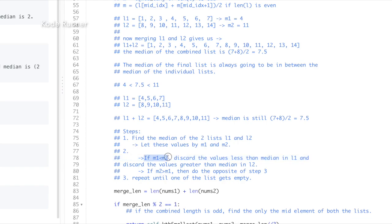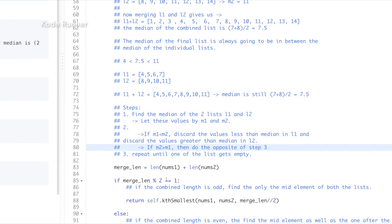If the value of m1 is less than m2, we discard the values less than m1 in list 1 and values greater than m2 in list 2. We do the opposite if the value of m1 is greater than m2. And the last and the final step is that we keep repeating this until one of the list gets empty.